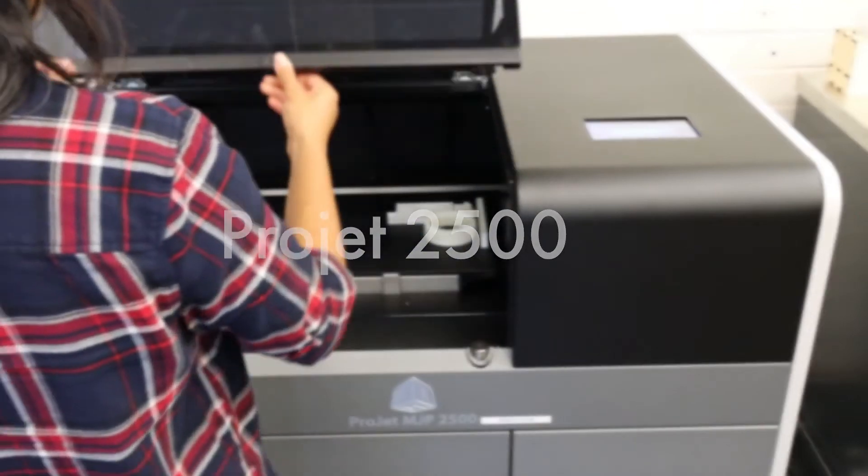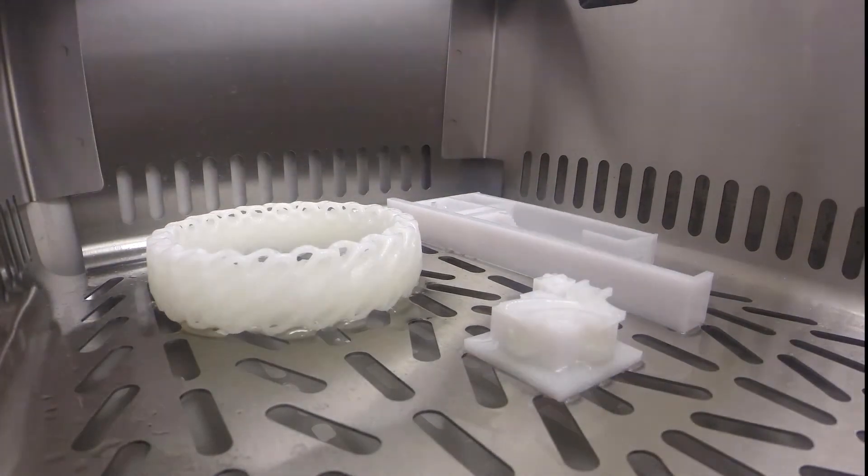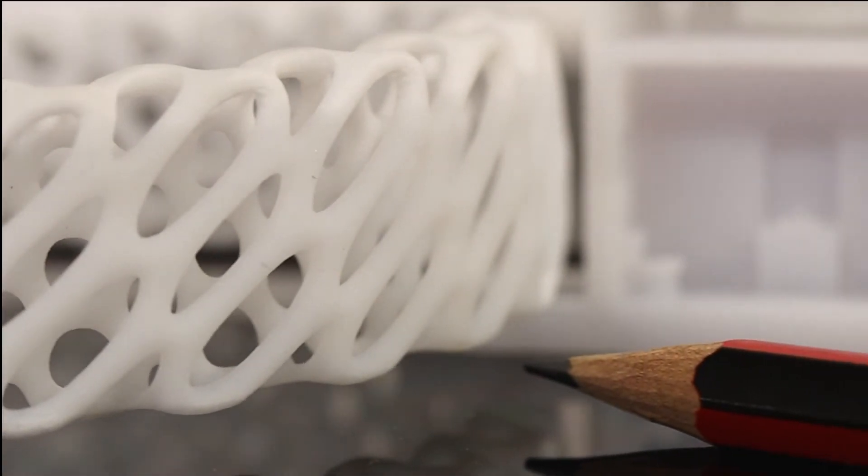Our multi-jet 3D printer uses multiple print heads to deposit both the model material and wax support material. This wax support material is melted off in the post-processing stage. This printer is excellent at producing small details accurately.